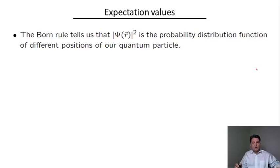The special case we're going to consider is the measurement of a coordinate of a quantum particle. The Born rule tells us that the absolute value of the wave function squared gives us the probability distribution function of different positions of a quantum particle.